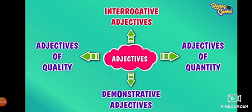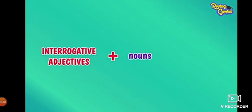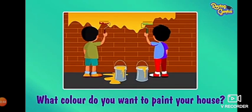Interrogative adjectives. Interrogative adjectives are used along with nouns to ask questions. For example, what color do you want to paint your house? In this sentence, what is the interrogative adjective used along with the noun color.